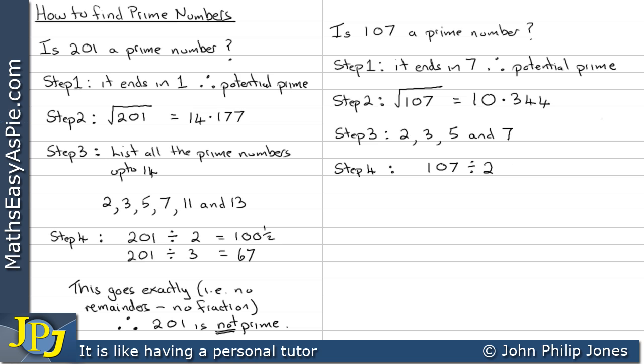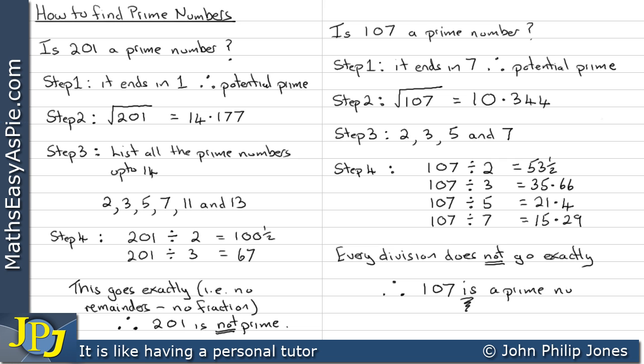Step 4. We divide by each of the prime numbers. So we divide 107 by 2. We can see we get a fraction in the answer. Likewise when we divide by 3. When we divide by 5 we get a fraction in the answer. When we divide by 7 we get a fraction. Every division does not go exactly. Therefore 107 is a prime number.